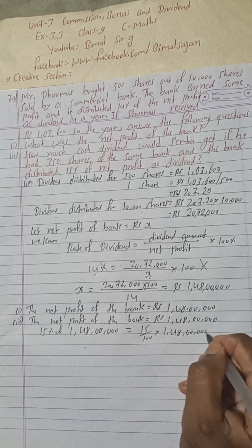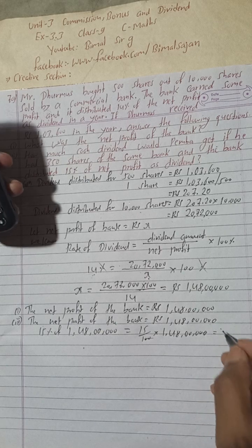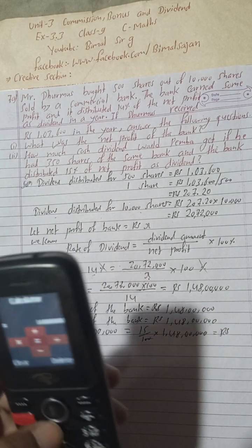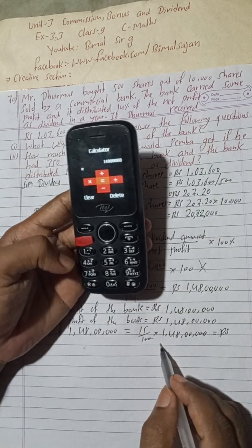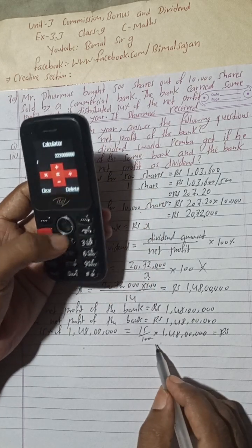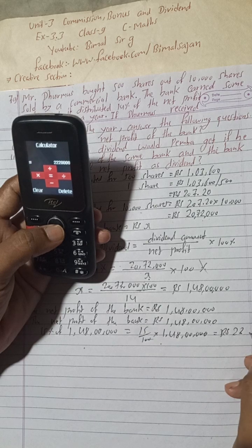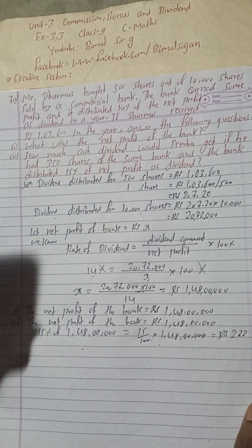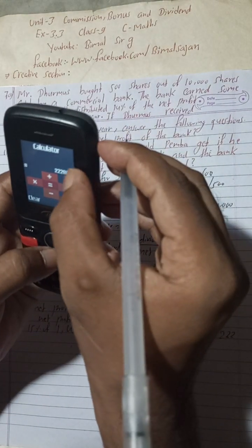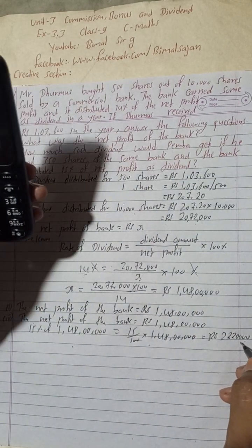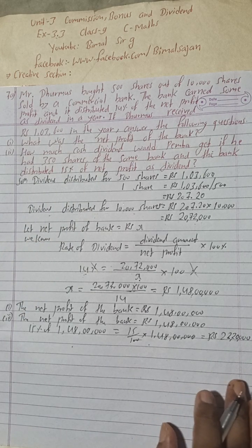Calculating: (15/100) × 1,48,00,000 — cancelling zeros — gives Rs 22,20,000. So the total dividend distributed for 10,000 shares is Rs 22,20,000.